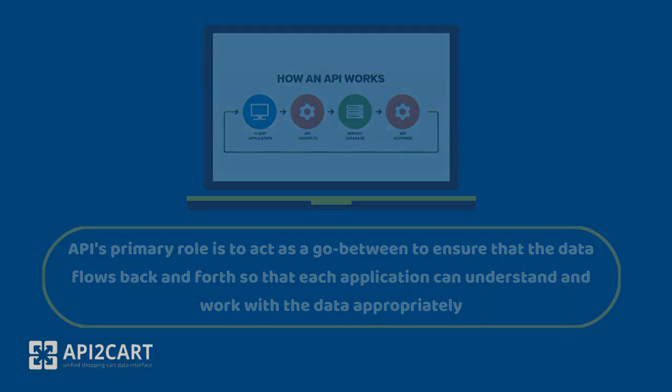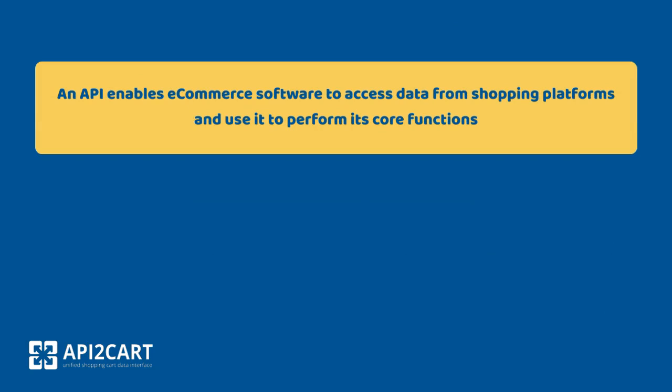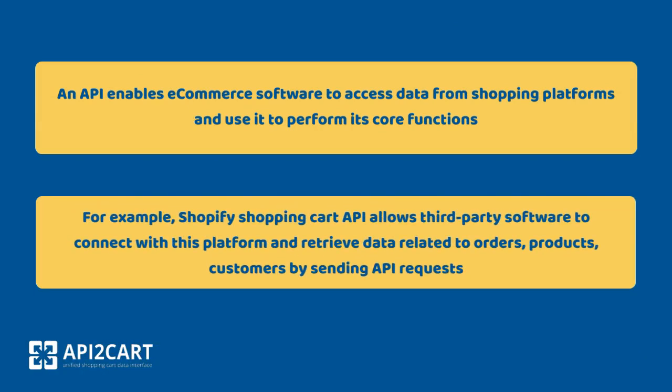An API enables e-commerce software to access data from shopping platforms and use it to perform its core functions. For example, the Shopify Shopping Cart API allows third-party software to connect with the platform and retrieve data related to orders, products, and customers by sending API requests.